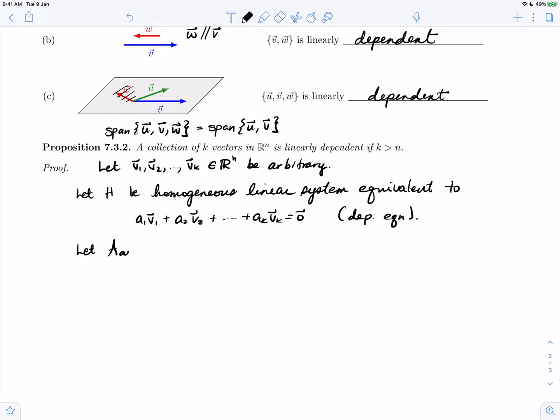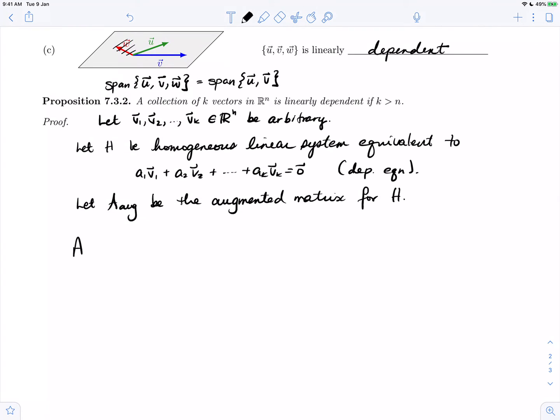Let's let A_aug be the augmented matrix for H. We've seen in a previous video that A_aug will look like the vectors v1 through vk, their components, as columns. And since H is augmented the constants will all be 0. A_aug will have n rows, since we are in R^n, and we'll have k columns.